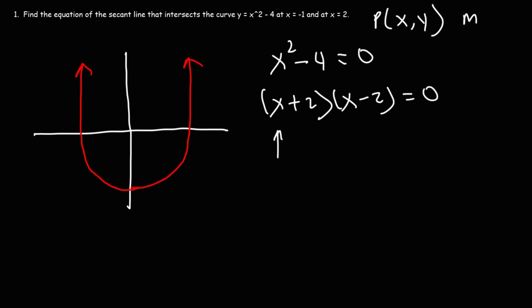Now if we solve for each factor, we're going to get x equals 2 and x equals negative 2. So these are the x-intercepts.